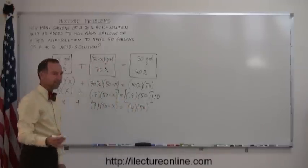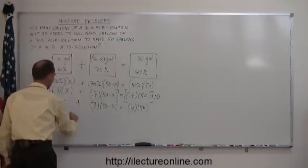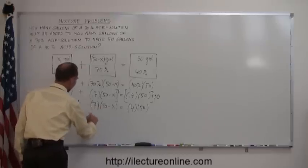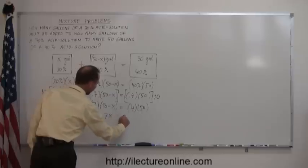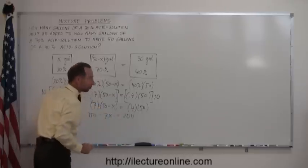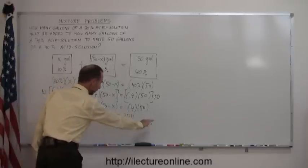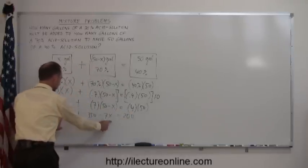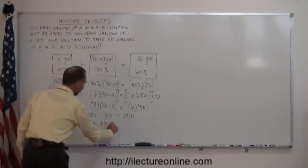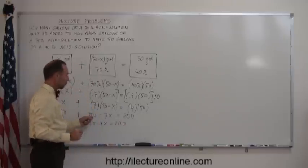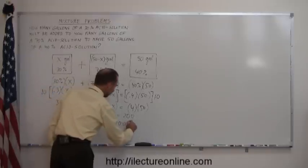Okay, now we just simply go ahead and get rid of the parentheses. So, I have 3x plus 7 times 50 is 350, 7 times minus x is minus 7x equals 4 times 50 is 200. And, of course, what we do here is we move all the terms with the x to the left side, all the terms that don't have an x to the right side. So, I have these already in the right location. 3x minus 7x equals 200. And when we move the 350 over the other side, remember, we change the sign. This becomes minus 350.